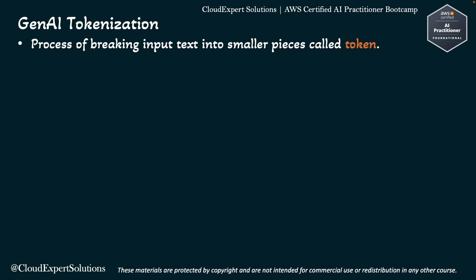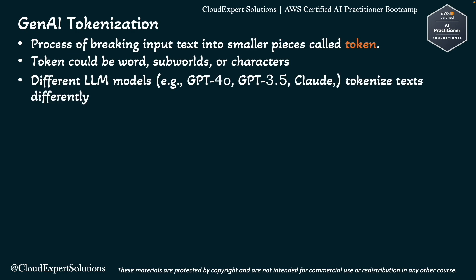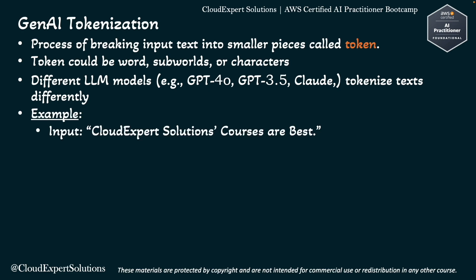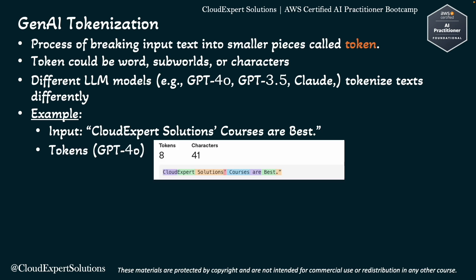Tokenization is the process of breaking input text into smaller pieces called tokens. These could be words, sub-words, or characters depending on the model. Different models tokenize text differently. For example, the sentence 'cloud expert solutions courses are best' could be split into eight tokens.